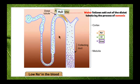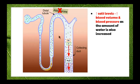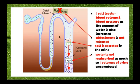Water follows the salt out of the distal tubule by the process of osmosis. So inadvertently, aldosterone does work to help reabsorb water, but its main job is to reabsorb the salt, and the water just tags along through osmosis. Because we're drawing water out of the nephron, a lower volume of concentrated urine is produced and water is conserved in the body. When we have an increased level of salt in the blood, blood volume and blood pressure increase. At that point, aldosterone is not released, so salt is excreted in the urine along with water, and there are increased volumes of urine produced.